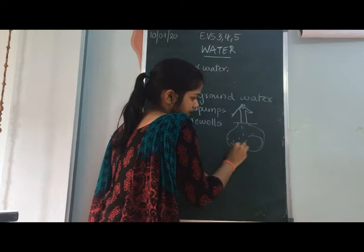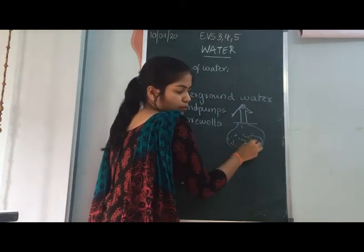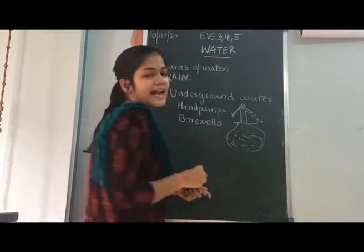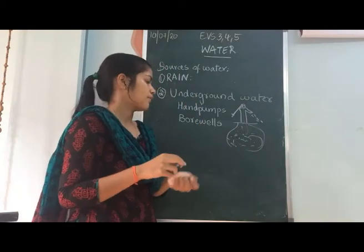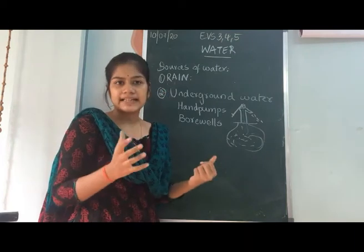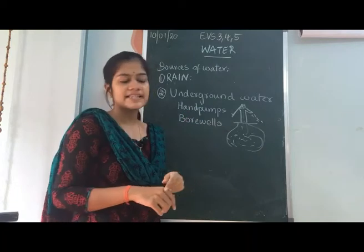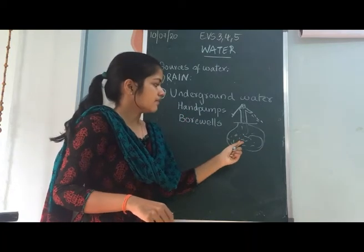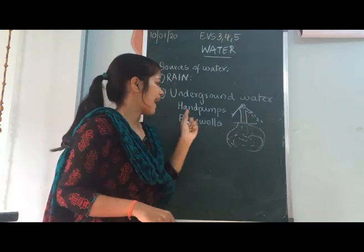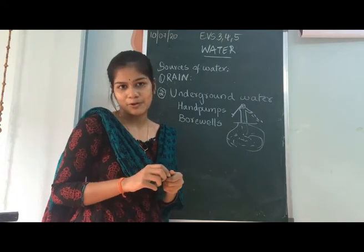The underground water sits below the surface. When you use a hand pump, due to the pressure, this underground water comes up and out through the pump. When rain falls from the clouds, it goes deep into the ground and settles. Using hand pumps or bore wells, the underground water comes up through pressure. This water is perfectly safe and can be used for drinking.